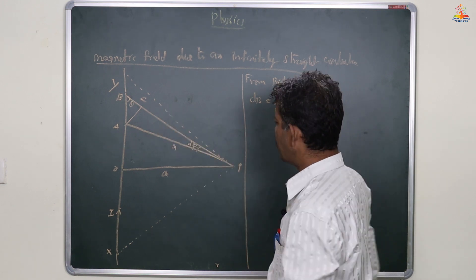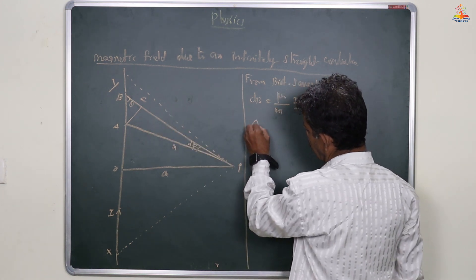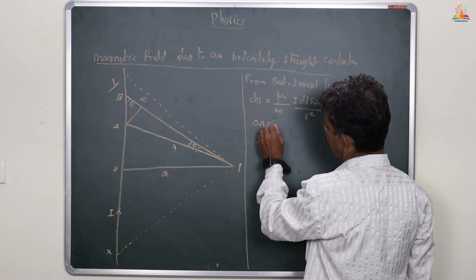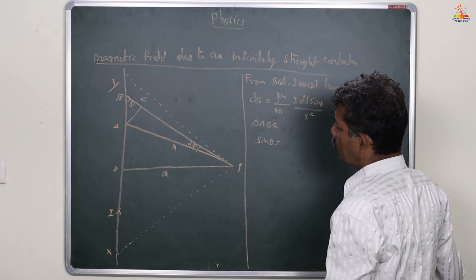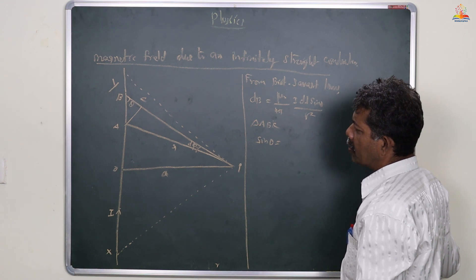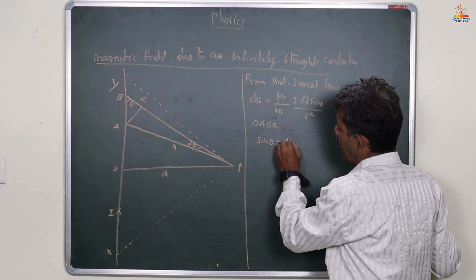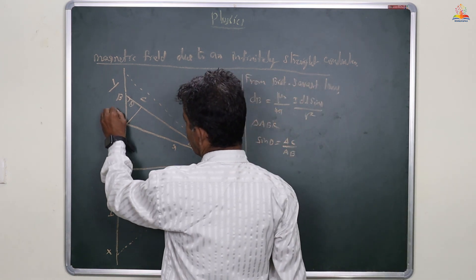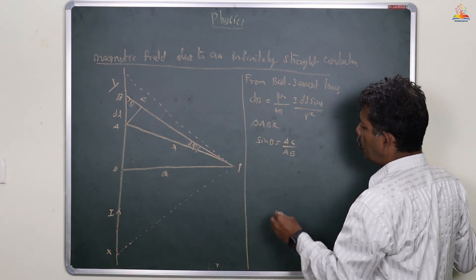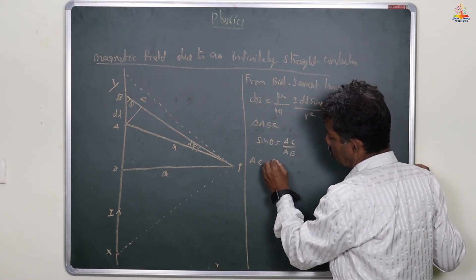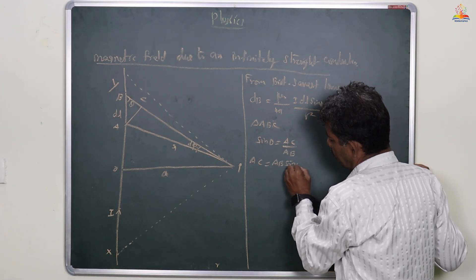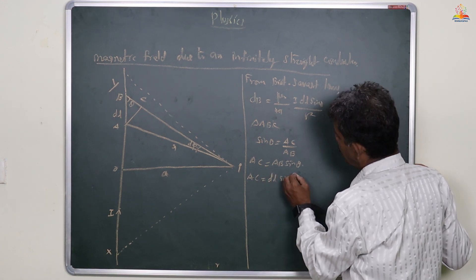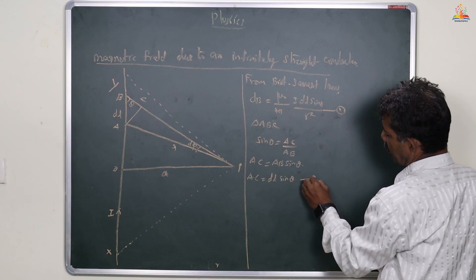First, we take triangle ABC. Sin theta is equal to the opposite side by hypotenuse, which is AC by AB. So AC is equal to AB sinθ, meaning AC equals dl sinθ. This is the first equation. This is also used as the second equation.